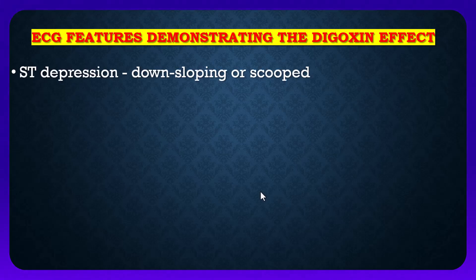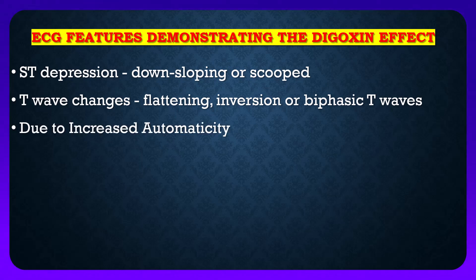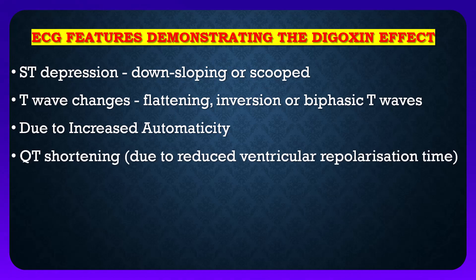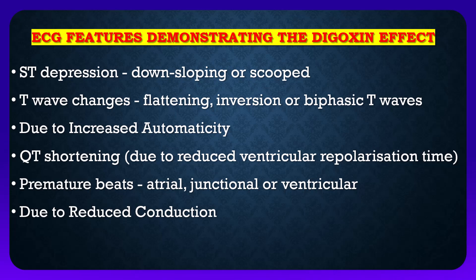The second feature is T wave changes, which are flattening, inversion, or biphasic T wave. These are due to increased automaticity and QT shortening due to reduced ventricular repolarization time. Premature beats, either atrial, junctional, or ventricular, may be seen on ECG. These premature beats are due to reduced conduction in the conductive system of the heart and prolonged PR interval.